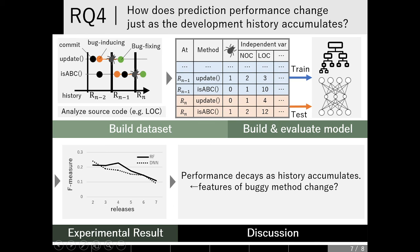RQ4: how does prediction performance change as the development history accumulates? The dataset building process and model building process are the same as RQ3. This graph shows experimental results. The vertical axis means F-measure, in other words the prediction performance, and the horizontal axis means release number. As you can see, the prediction performance decays as the development history accumulates. This may be because the features of buggy methods change as software development proceeds, so it fails to predict buggy methods with a model that reflects past buggy methods. This is just a hypothesis, so we will test it in the near future.